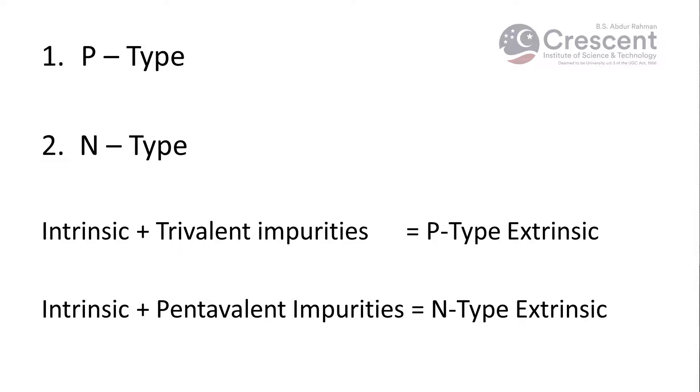Trivalent impurities are added to form a p-type extrinsic semiconductor, and pentavalent impurities are added to form an n-type extrinsic semiconductor. Let us now see how p-type extrinsic semiconductors are formed by adding trivalent impurities. The best examples of trivalent impurities are boron, gallium, and indium. Let us see how a p-type extrinsic semiconductor could be formed — a trivalent boron impurity is being added.